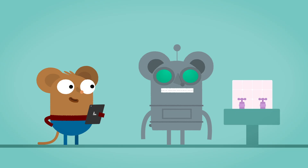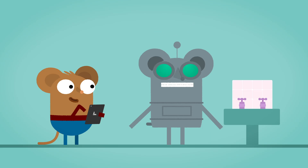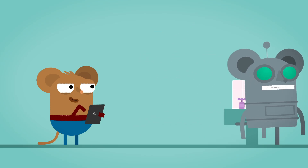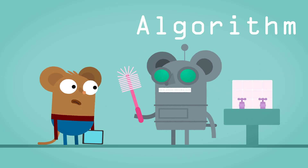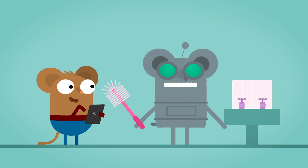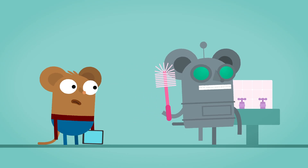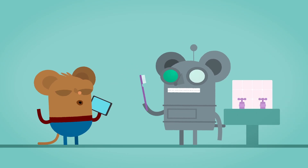If we want a computer to understand how to do something, we need to give it an algorithm. Algorithm sounds like a big word, doesn't it? But actually, an algorithm is something very simple but important. An algorithm is a list of steps you give to computers to solve a problem or get something done.